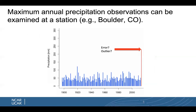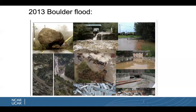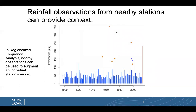Oftentimes we'll look at a particular rainfall station. These are maximum annual precipitation observations for the Boulder, Colorado station. You can see there's pretty consistent annual maxima until 2013, which makes us ask: is this an error or could it be an outlier? In 2013, there was a flood in Boulder with much greater precipitation than had been seen before at this location. Nevertheless, if we look at rainfall observations from nearby stations like Fort Collins, we can see context — while unusual for Boulder, it's not the most extreme seen for other nearby stations. Regionalized frequency analysis, often used for flood frequency analysis, can use nearby observations to augment an individual station's record.